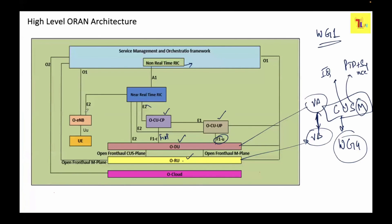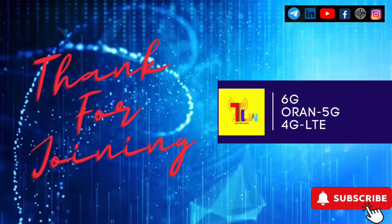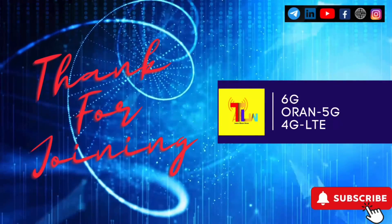The O1 interface is used to send configuration changes — when SMO needs to push configs to CU-CP, UP, DU, or RU, it does so over O1. To understand all these components, we look at the corresponding working groups: Working Group 2 covers Non-RT RIC, Working Group 3 covers Near-RT RIC, Working Group 4 covers the fronthaul planes, and Working Group 1 covers the overall O-RAN architecture. O-RAN specifications are easier to follow than 3GPP specifications.